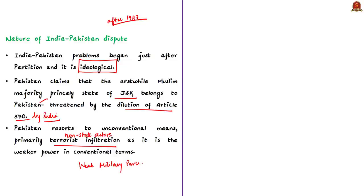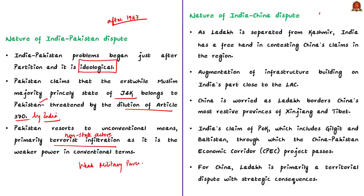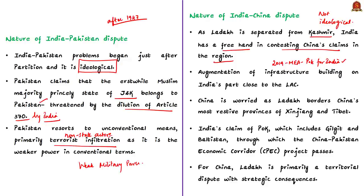The India-China border dispute is not an ideological dispute. China perceived the dilution of Article 370 differently — it knows that Ladakh is now separated from the Kashmir problem, giving India a freer hand in contesting China's claims in the region. India has also augmented its infrastructure building close to the Line of Actual Control. In 2019, the External Affairs Minister stated that Pakistan-occupied Kashmir belongs to India and that India will one day have physical jurisdiction over it.